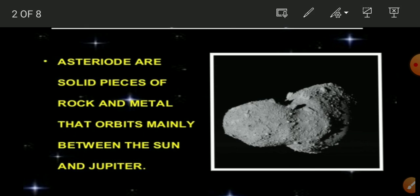What are asteroids? Asteroids are celestial objects — small objects present in the solar system. These small objects are present in the gap between Mars and Jupiter, and they revolve around the sun. Asteroids can only be seen through a large telescope, which is why they are called small objects.